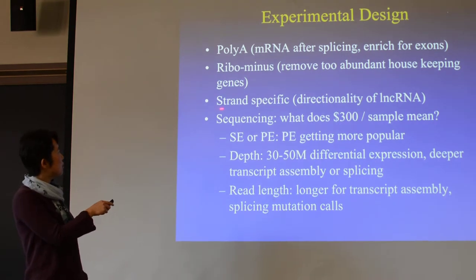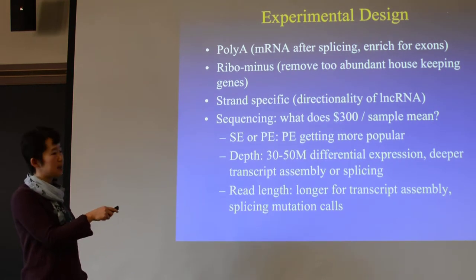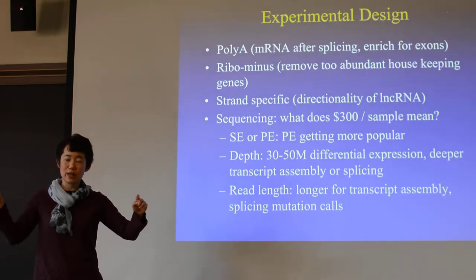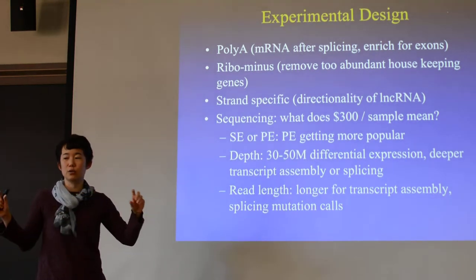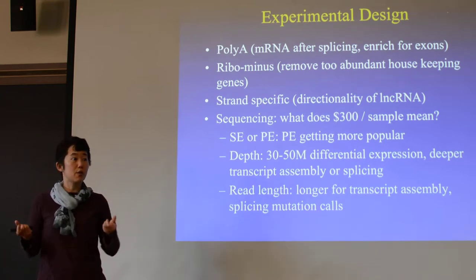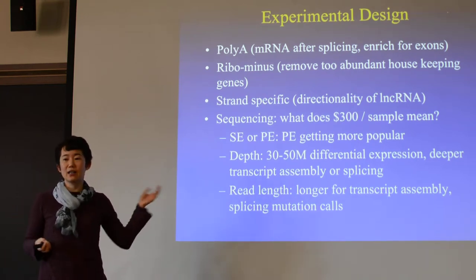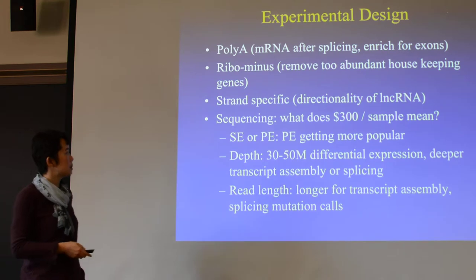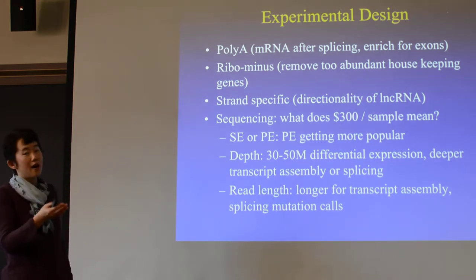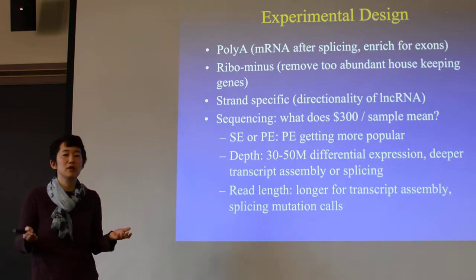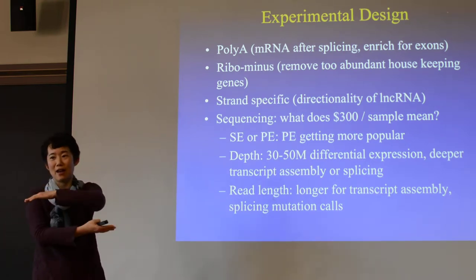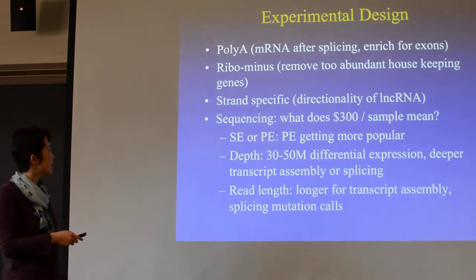There are also protocols for strand-specific sequencing, so in the final transcription you know which strand. Because once you convert to cDNA, sometimes you don't know which was the original strand. There are different kits you can buy to get strand-specific RNA. Sometimes for lncRNA especially, if you don't know which direction the gene is going, you can use strand-specific methods.